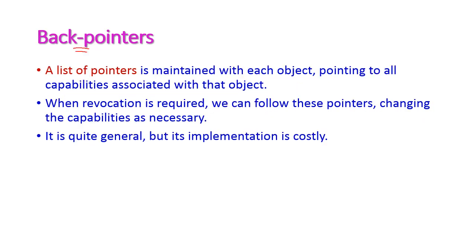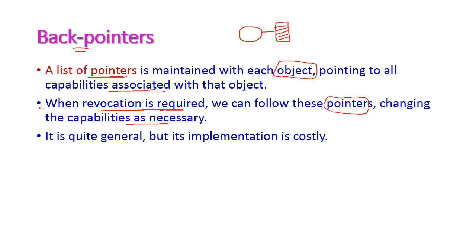The next one is back pointers. Here a list of pointers is maintained with each object, pointing to all capabilities associated with that object. Once we create a particular object, all the capabilities will be pointed to by a list of pointers. If any revocation is required, we follow these pointers, changing the capability if necessary. This is quite general but implementation is very costly because the pointers have to be maintained periodically.